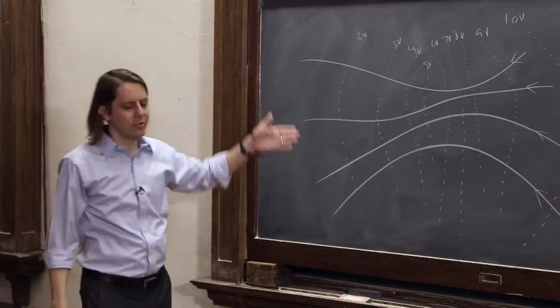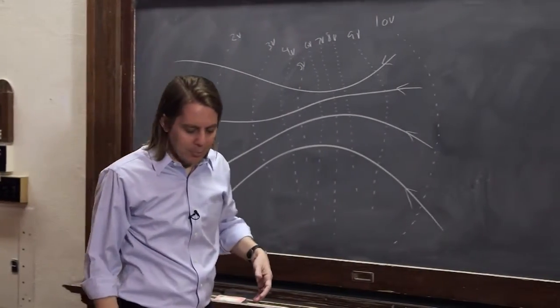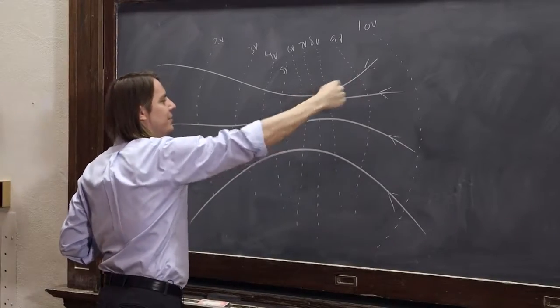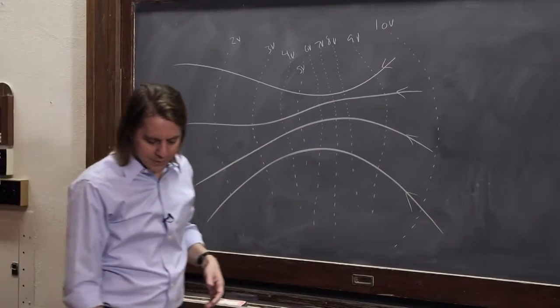If you move across any of those lines, you're always at the same potential. If you move between the lines, then the potential is changing, and that's because the field is in that direction.